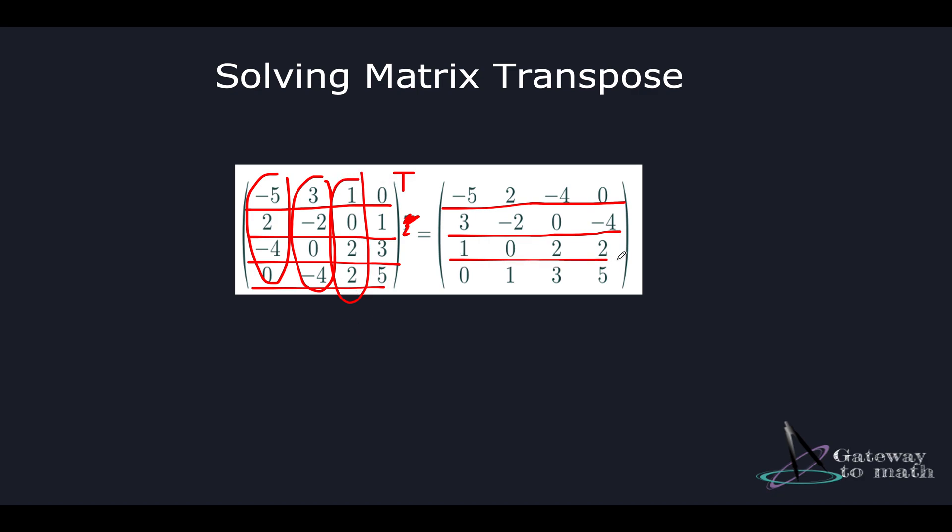Then the last row, the entries in the original matrix equals 0, minus 4, 2, 5. Let's go ahead and change it with the entries in the last column which equals 0, 1, 3, and 5 respectively.